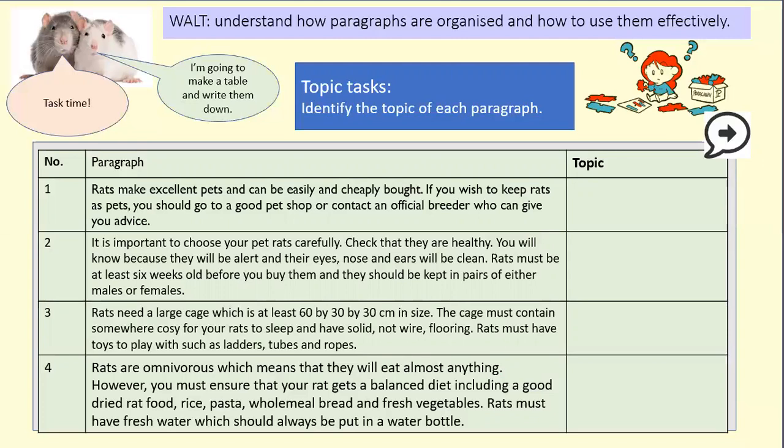You might want to make yourself a short table with numbers one, two, three, and four, and space next to each for writing the topics down. I've given you four paragraphs all about rats, but each paragraph has a different focus — a slightly different aspect of looking after rats. Write down what each paragraph is about. I'll read them all and then you can pause the video and make some notes.